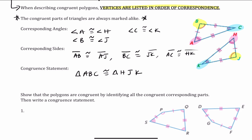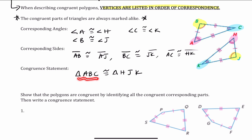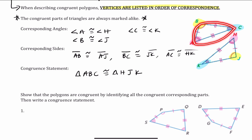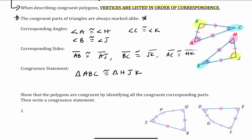Allow me to clarify how to write a congruence statement. I wrote triangle ABC — starting at A, then B, to C, and back to A. On the left-hand side of the congruence symbol, it doesn't matter. You could call this triangle CAB or triangle CBA, going around and coming back to the letter you started with. You could also write triangle ABC or triangle ACB.